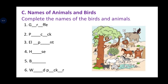Now we move on to the next question: Names of Animals and Birds. We have to write the names of the birds and animals shown in the pictures. Here we have a picture of each animal and bird with a blank to fill in. For example, number one — let's look at the picture — number one is a giraffe. The spelling is G-I-R-A-F-F-E, giraffe.